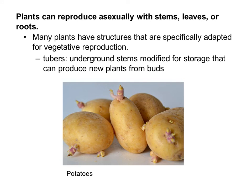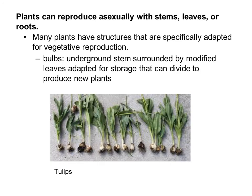This is actually a key point in the movie and book The Martian, where the character is able to grow potatoes on Mars because he can make several plants from one potato. Bulbs are another form of vegetative reproduction — they are underground stems surrounded by modified leaves, adapted for storage, and they can also divide and produce new plants.